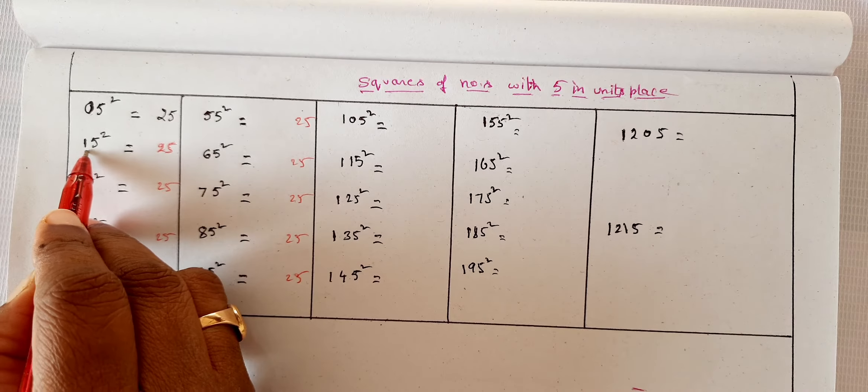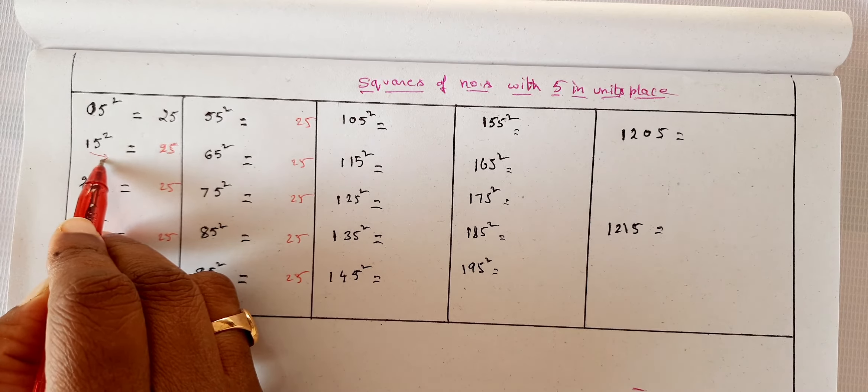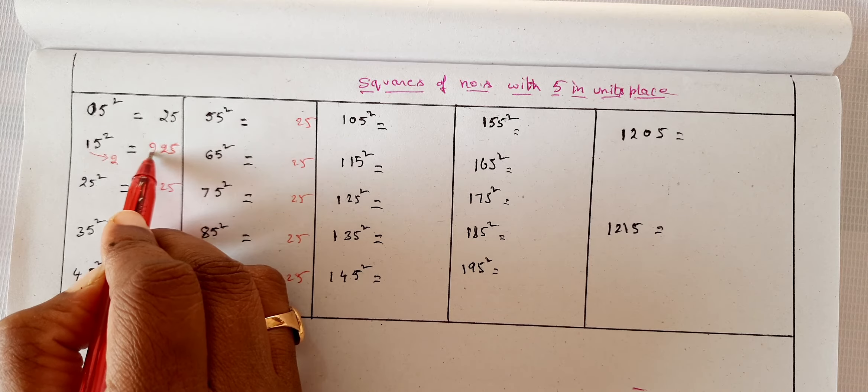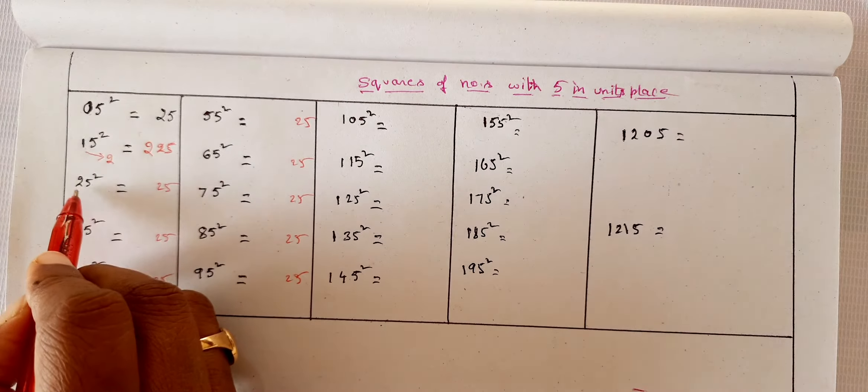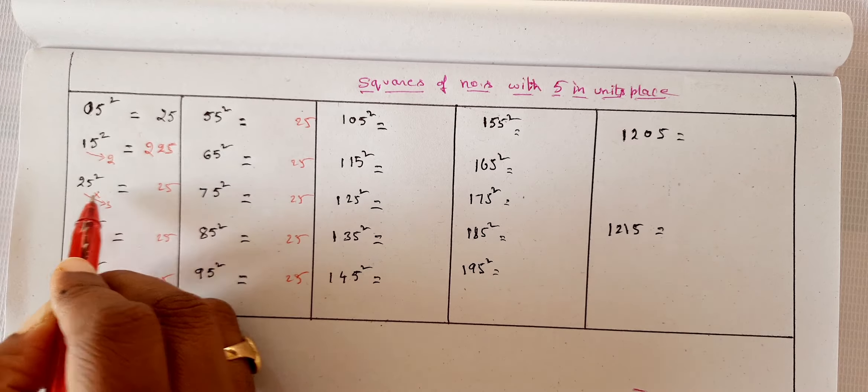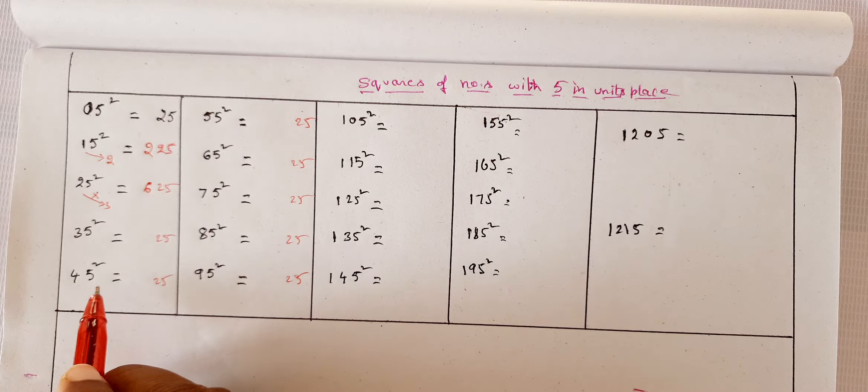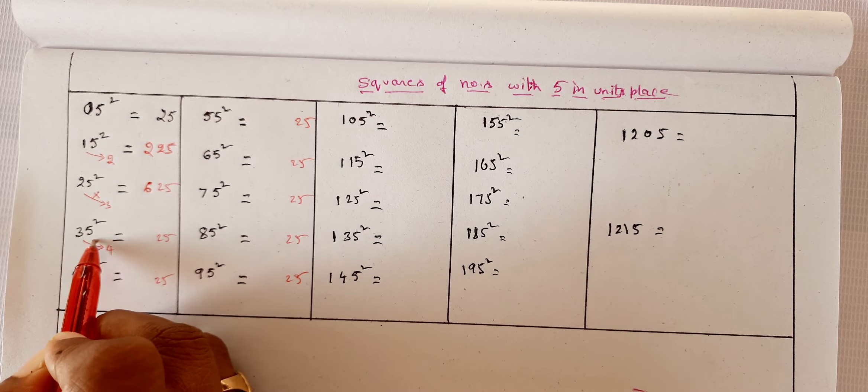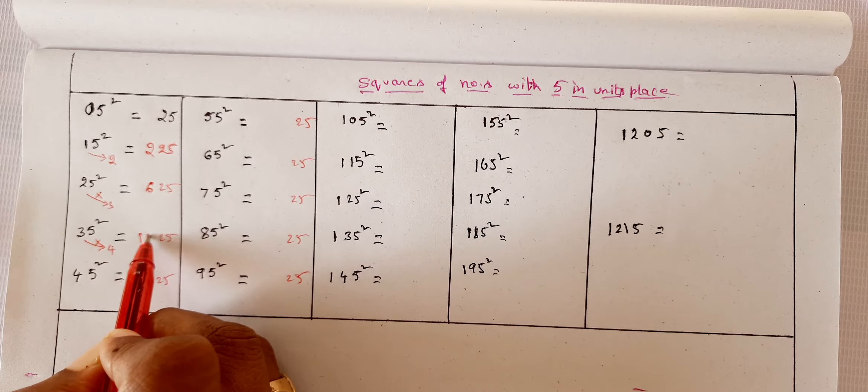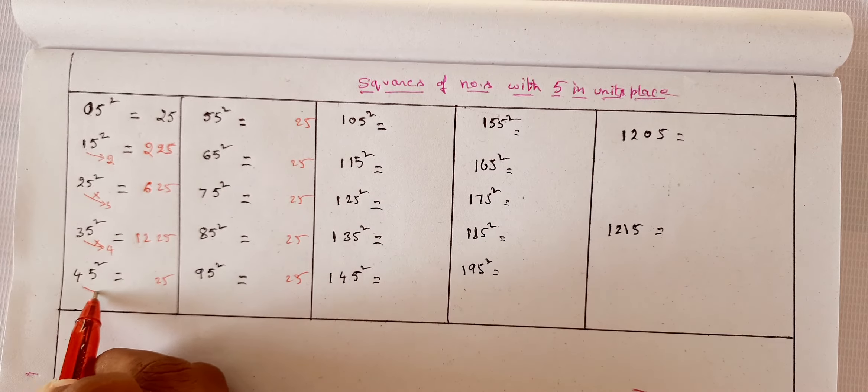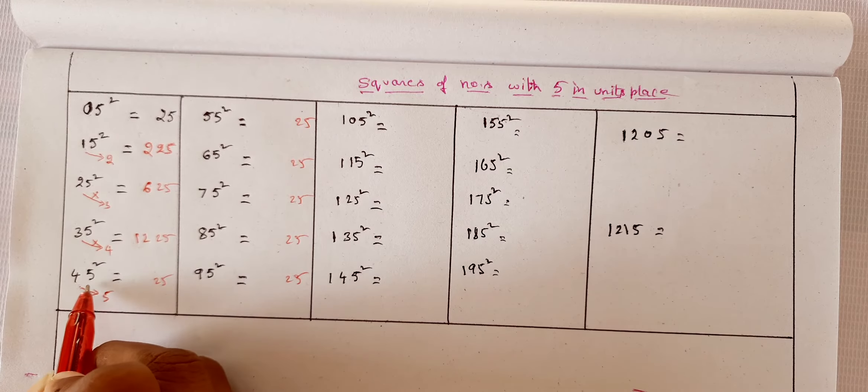Now let's come to the trick. So 15 squared—you have one in tens place, right? The next number is 2. One into two comes here, it is 2. Now here the next number is 3. Two into three is 6, so it's 625. Bingo! Three, the next number is 4. Three into four is 12, so 1225.